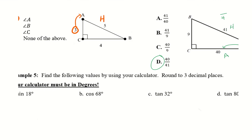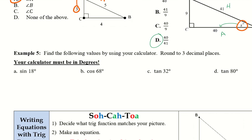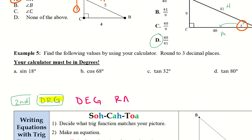Now example 5 — we want to find the following values using the calculator, rounding to 3 decimal places. First, make sure your calculator is in degrees. On a scientific calculator, press 2nd and then DRG. Click DRG and three options will pop up: DEG, RAD, and GRD. The one that says DEG is degrees — click on that, make sure the cursor is under it, and press enter. Your calculator is now in degrees.